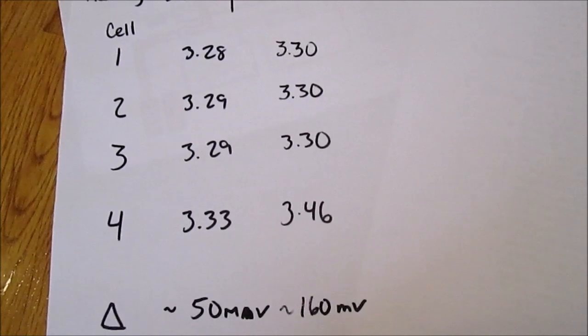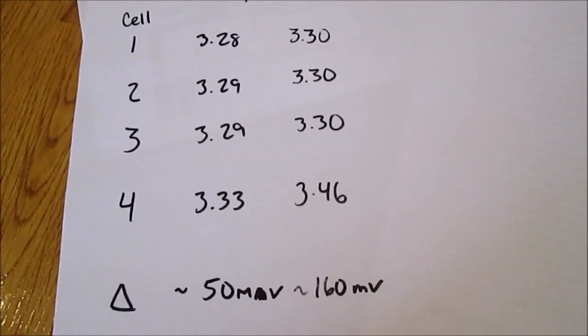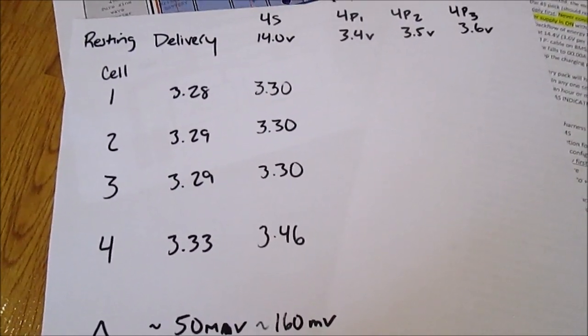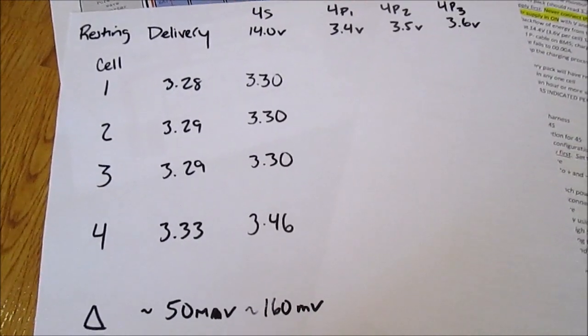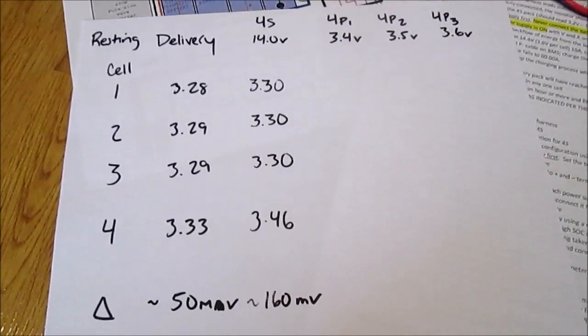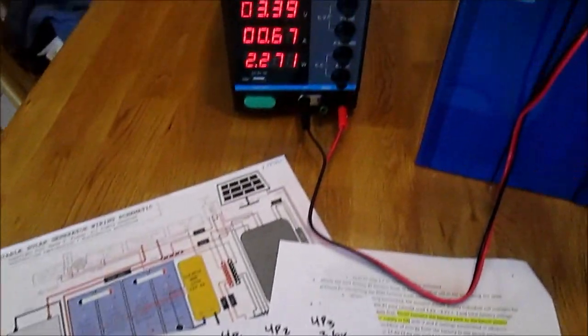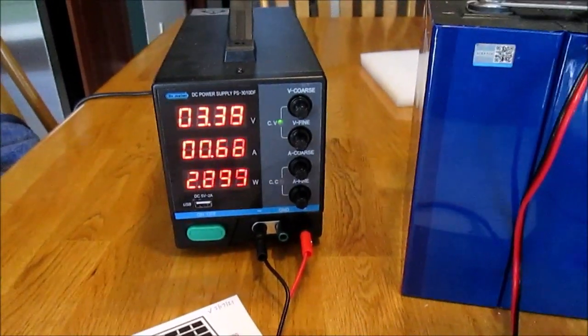The resting cell voltage upon delivery was approximately 3.28, 3.29, 3.29 and 3.33 volts per cell, so there was about a 50 millivolt difference. Having now put them together in series and charged them at 14 volts and let them rest, the resting voltages were 3.3 for the first three cells and 3.46 volts for the fourth cell.